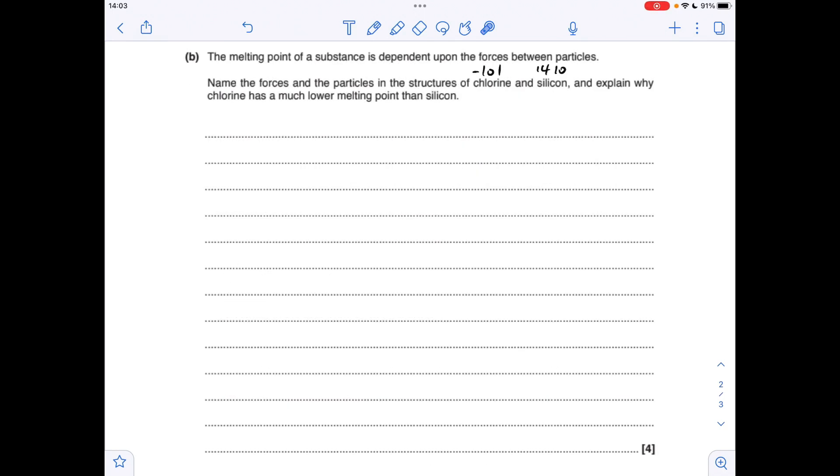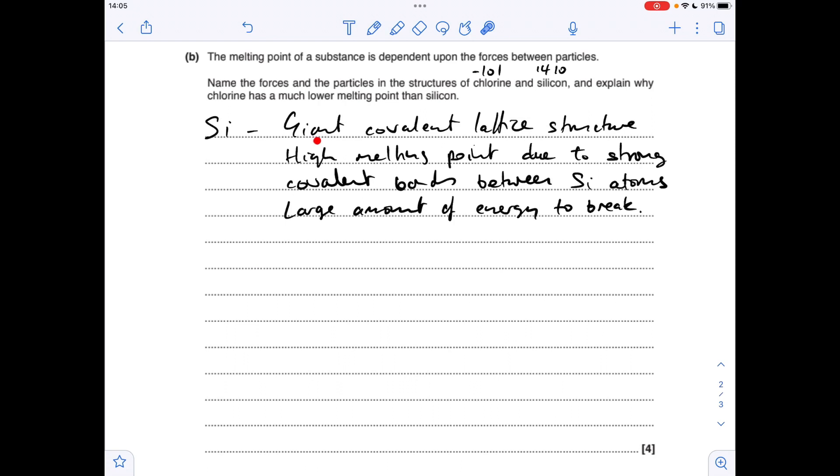Moving on to part B, we've got to talk about the forces between the particles in chlorine and silicon. You'll notice I've written up the melting points above each of the elements. Chlorine is minus 101, whereas silicon is 1410. So we'll start with silicon. Silicon's got a giant covalent lattice structure. It's got that high melting point of 1410 due to the strong covalent bonds between silicon atoms, so a large amount of energy is obviously needed to break them.